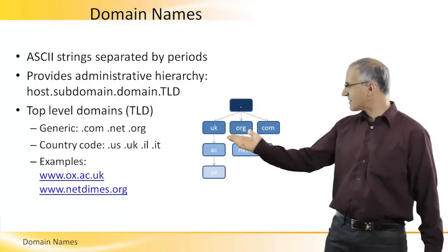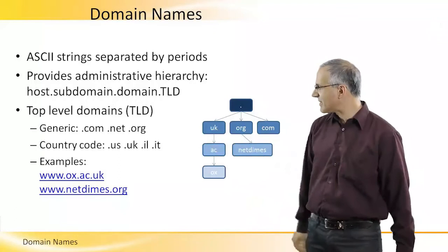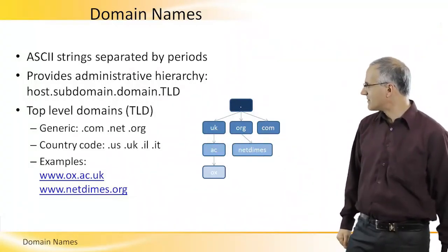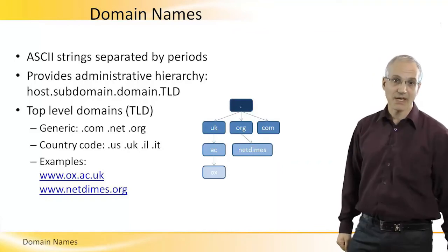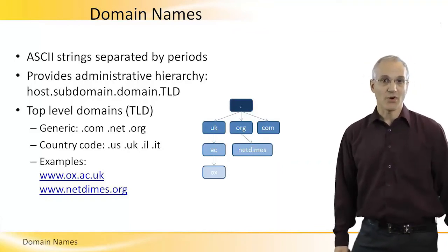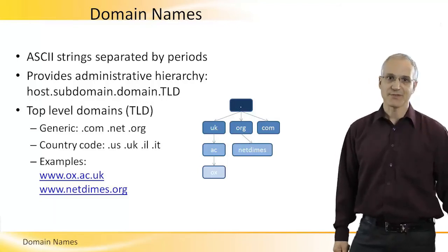So if you look at the host www.ox.ac.uk, this means that there is a machine called www, which belongs to domain ox, which is Oxford University.